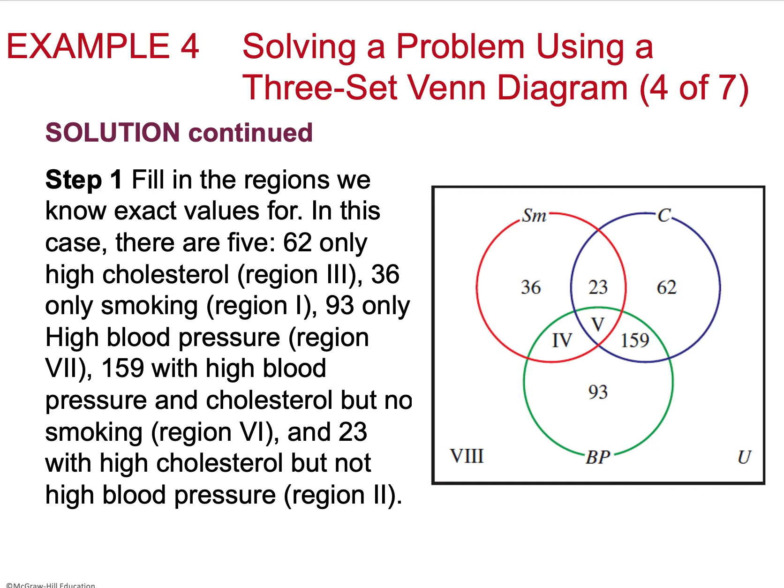Then I'm going to draw the diagram starting with that same diagram. I'm going to label what I know to be true. So there's 62 with only high cholesterol, I already know that with no math, 36 only smoking, 93 only high blood pressure. And then I have 159 in overlap between blood pressure and cholesterol, but not smoking. So that's going to highlight that area. And 23 with high cholesterol, but not blood pressure.